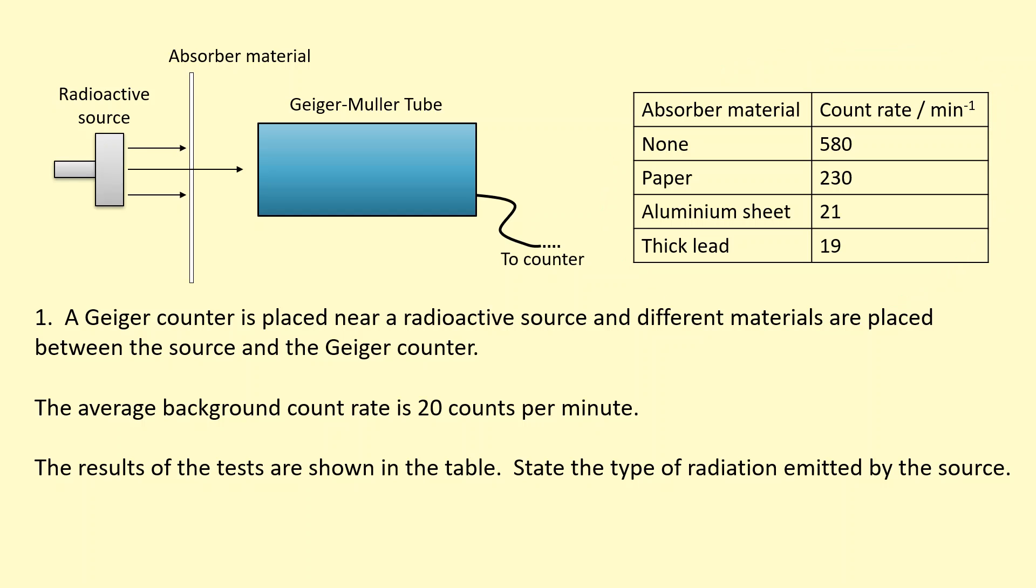So when we've got no absorber material, we've got 580. And as soon as we add paper, it's decreasing. So that must mean that this source is emitting some alpha radiation because that's being stopped by the paper. The beta and the gamma wouldn't be stopped by the thin paper.